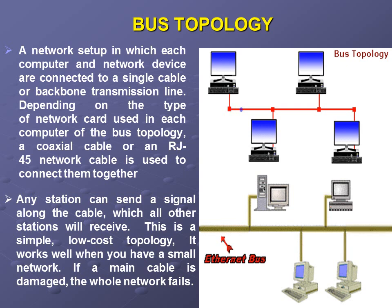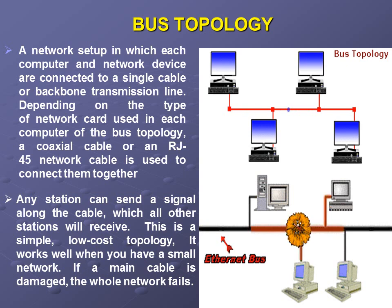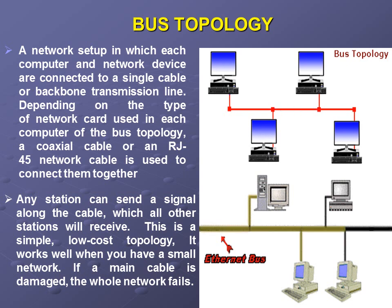In bus topology, any station can send a signal along the cable, which all other stations receive. This is a simple logical topology. It works well for small networks with two, three, or four computers. However, if the main cable is damaged, the whole network fails — as shown in the diagram, a broken cable brings down the entire network. This is a big drawback.